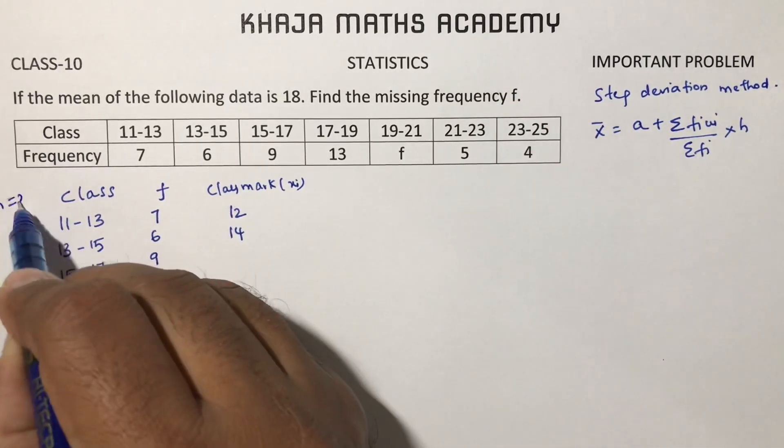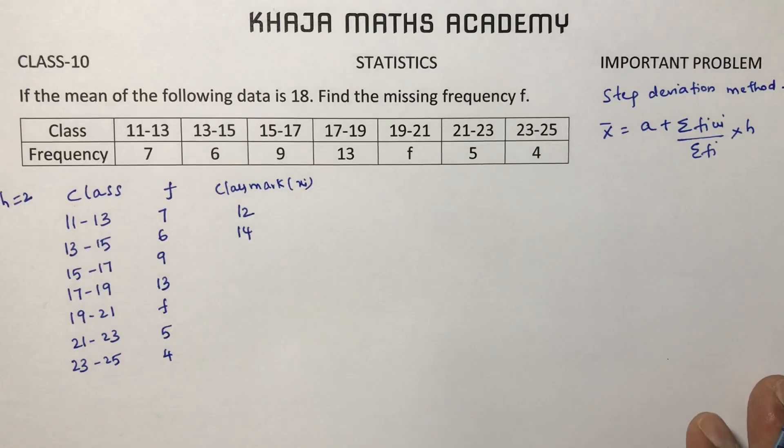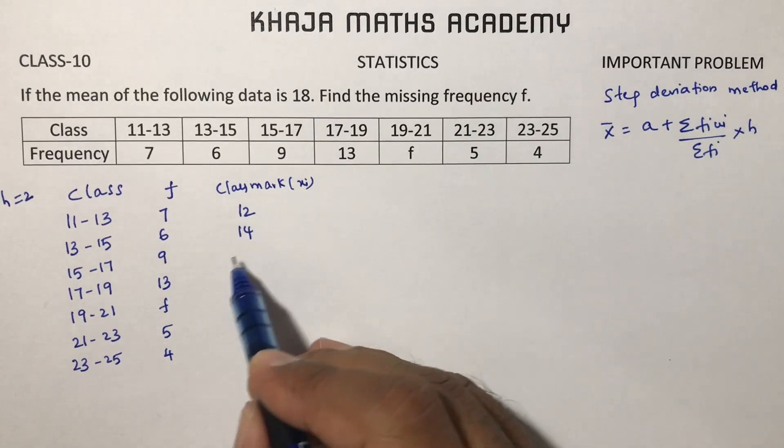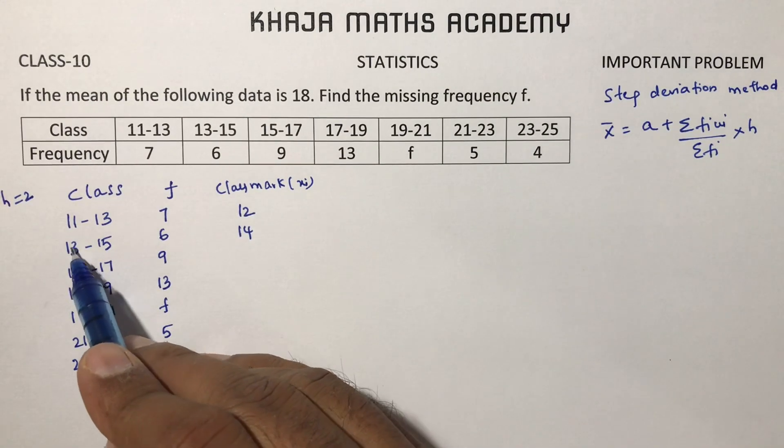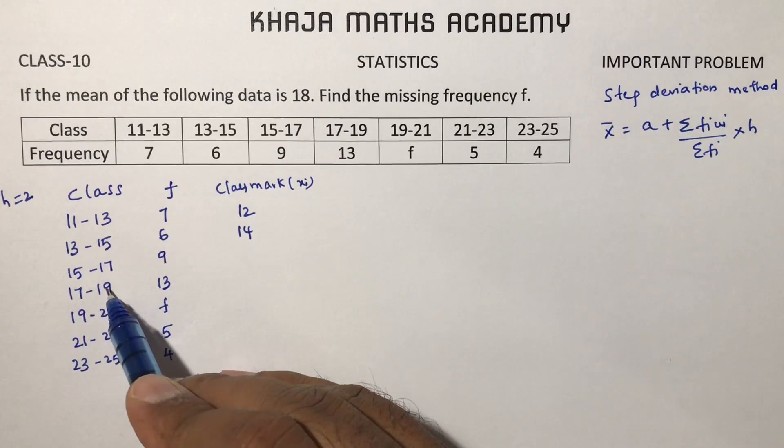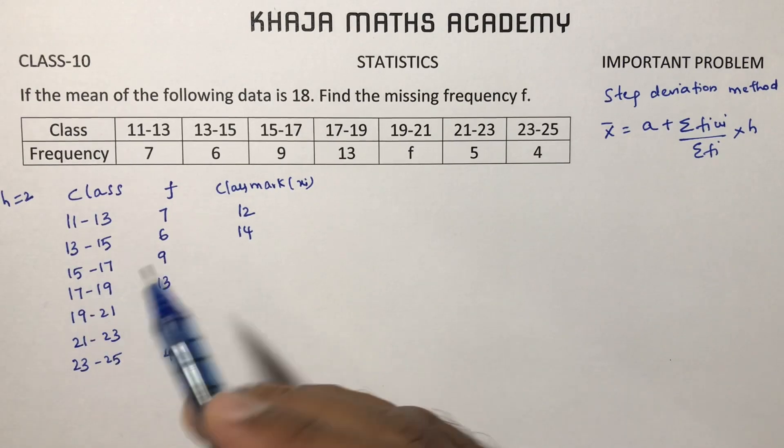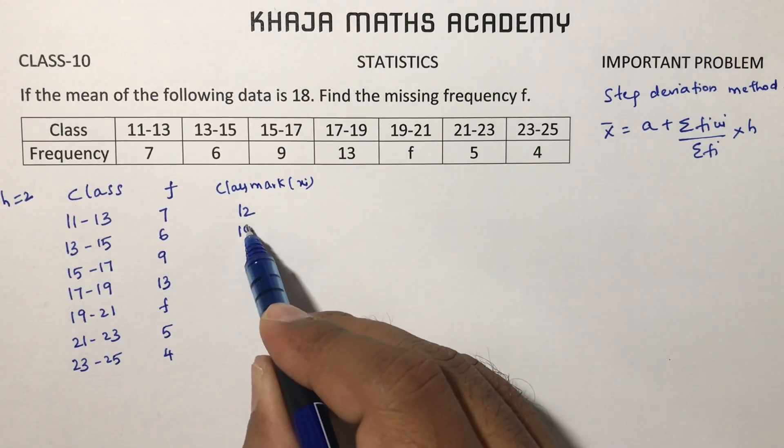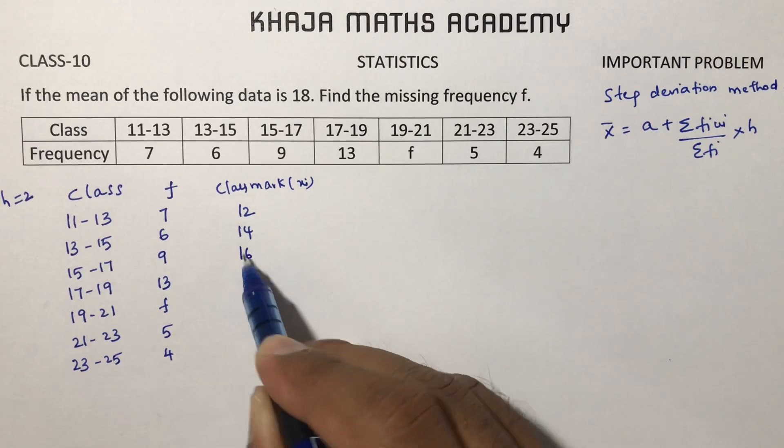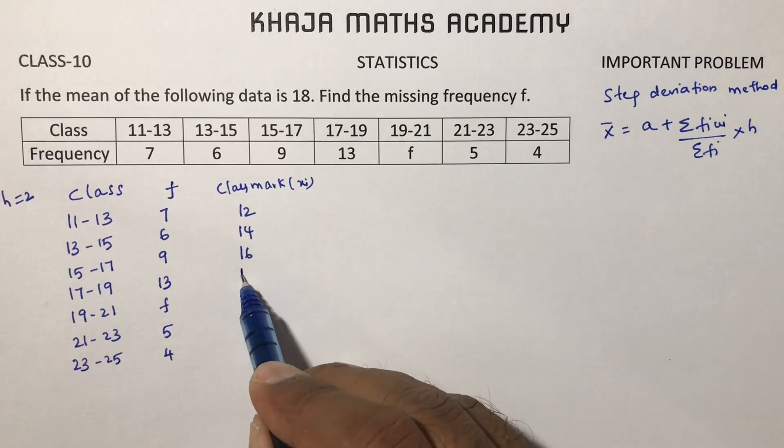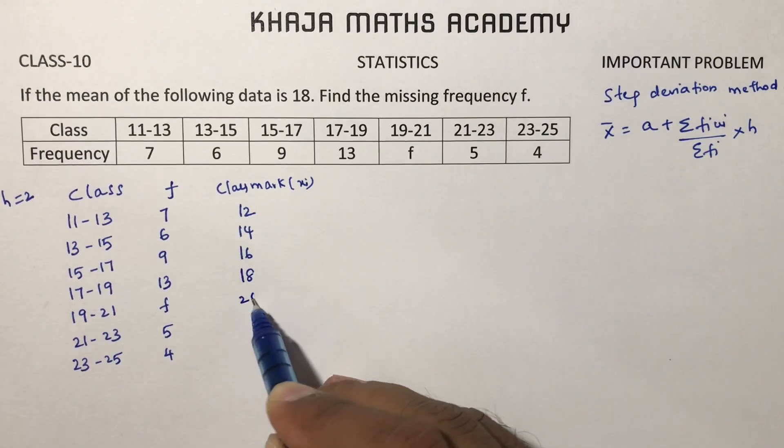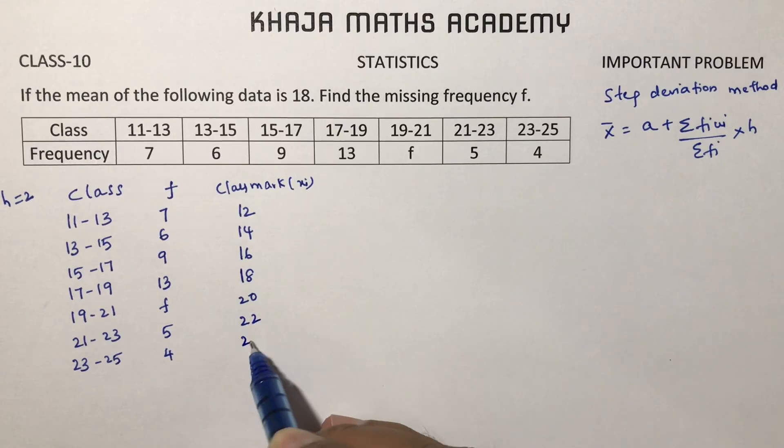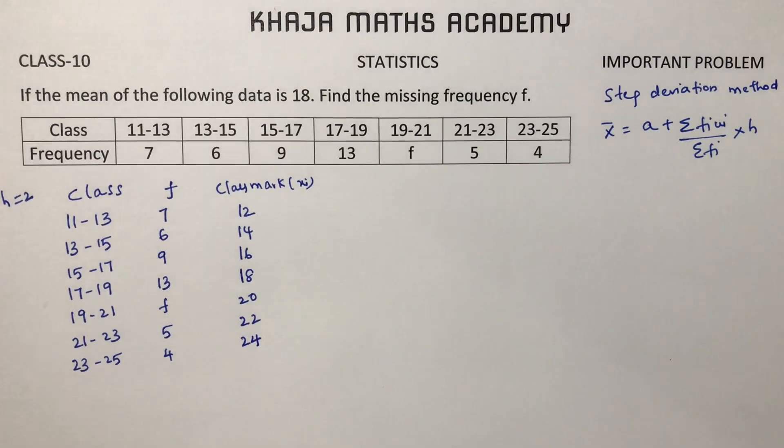H is 2. The value of h is 2. How I calculate h means from down to up anywhere you can subtract, like 19 minus 17, 17 minus 15. 14 plus 2 is 16, because I'm keeping on adding 2. 16 plus 2 is 18, plus 2 is 20, plus 2 is 22, plus 2 is 24.